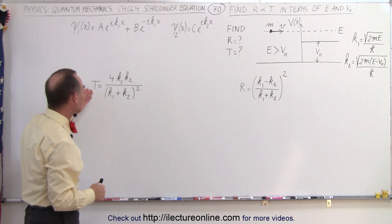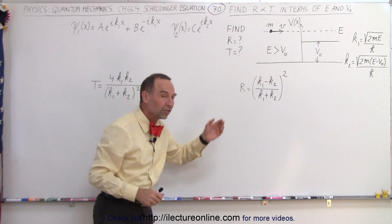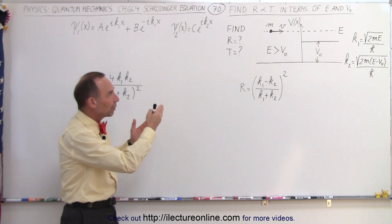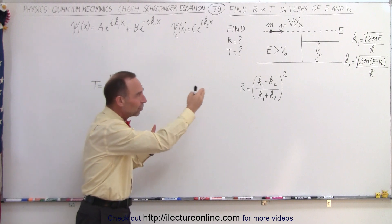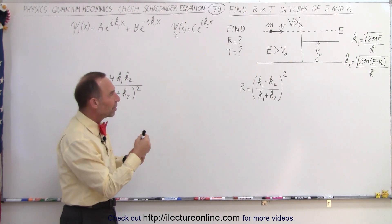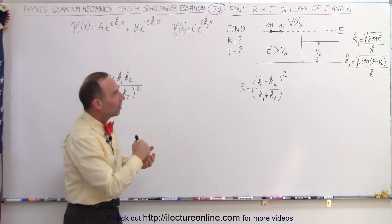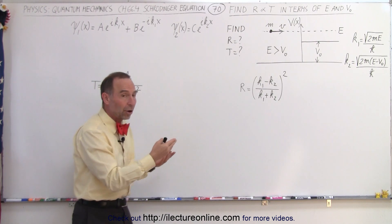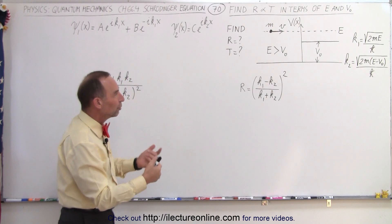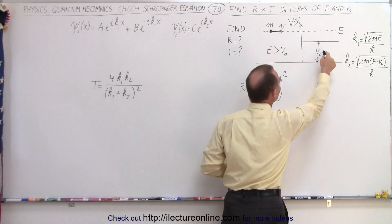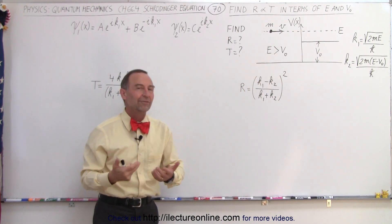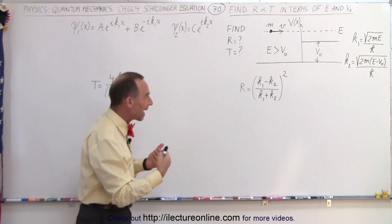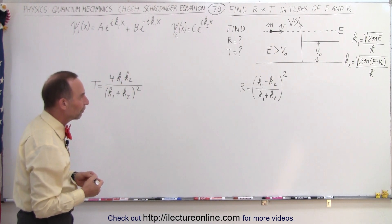Until now we've figured out the transmission and reflection coefficients in terms of the wave numbers K1 and K2. K1 is the wave number of the particle on the left side before it gets to the potential step, and K2 is the wave number of the particle to the right of the potential step. It would be better if we express T and R in terms of the energies E and V₀, because that is typically what we're given in a problem. So let's do that first, and then we'll show some examples of how to actually calculate the transmission and reflection coefficients.